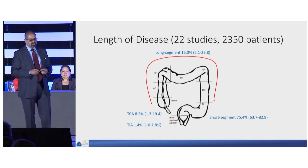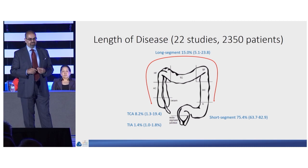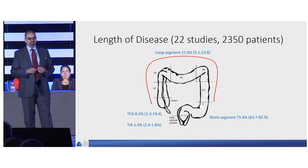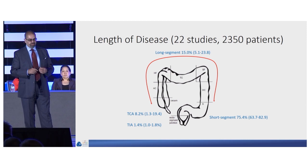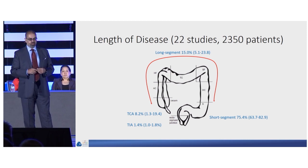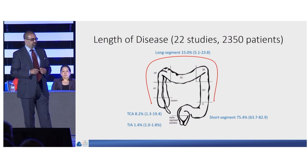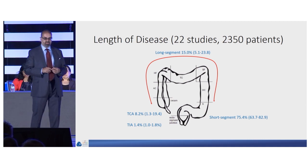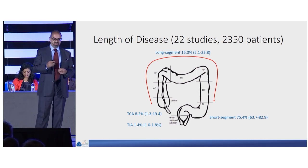We aggregated all studies that had details — 22 studies, 2,350 patients — and looked at what length of disease those studies included. About 75% of patients have short-segment Hirschsprung disease, 15% have long-segment, 8% have total colonic, and just over 1% have total intestinal.